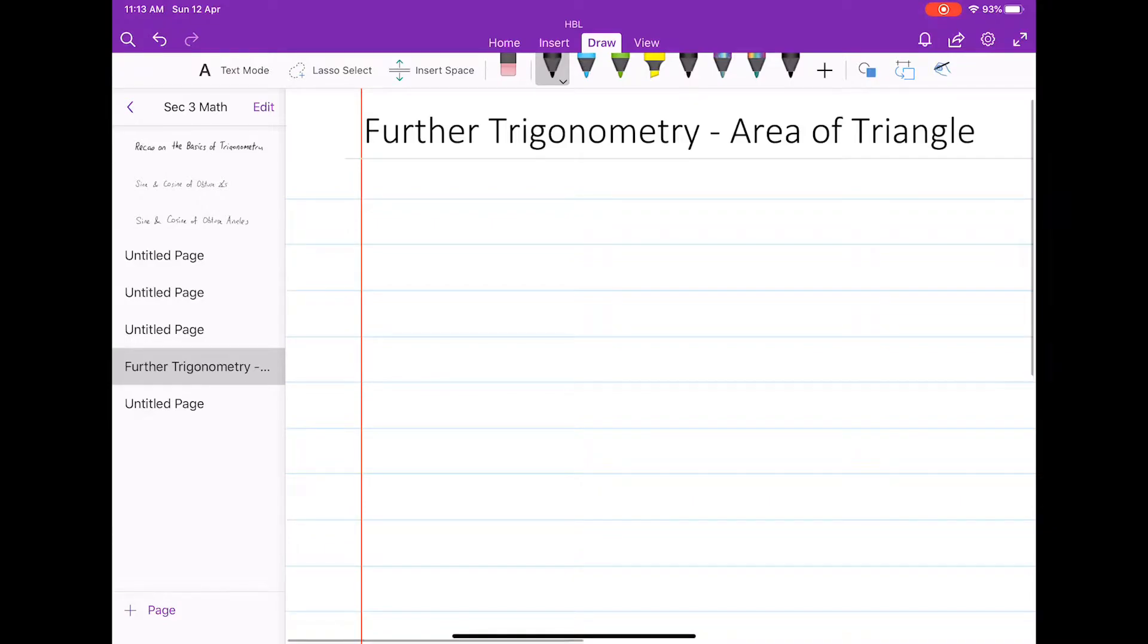So suppose I have a triangle. Suppose this is a triangle here. Suppose the length of this side is A and this side over here is B. And an included angle is given, let's call it theta.